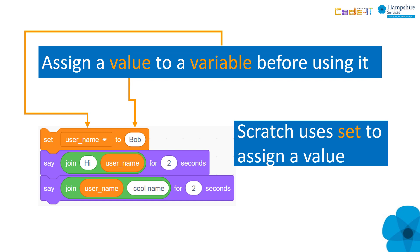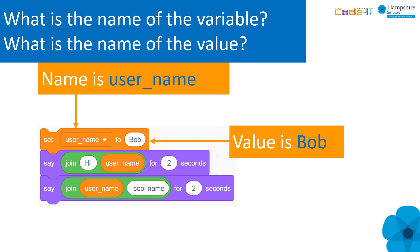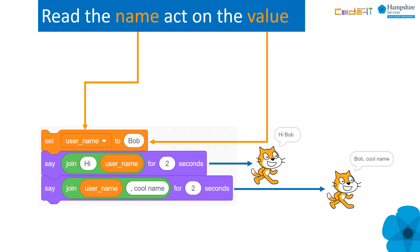An important programming principle is to assign values to variables before you start to use them. Scratch allows you to ignore this principle, but it's good practice to get into this habit anyway. Name and value are crucial parts of any program variable. Just like our silly algorithmic example earlier, if Scratch reads the variable name it acts on the value — in this case displaying the text. So it reads 'username' but displays 'Bob', because Bob's the value.